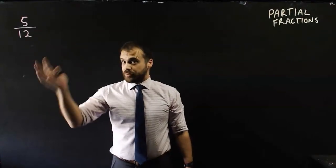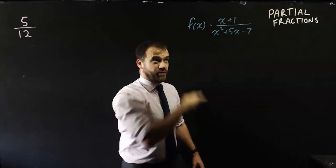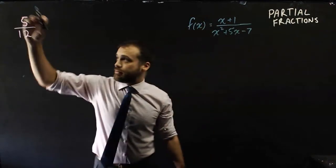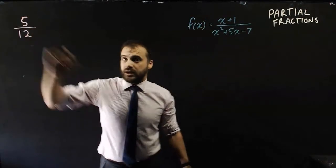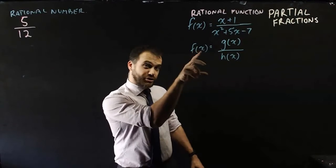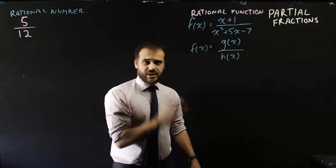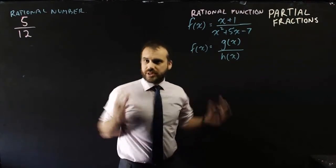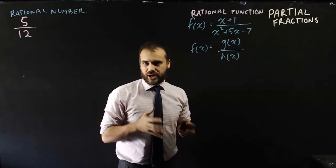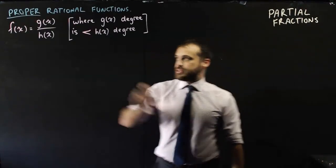This is a rational number, and this is a rational function — a function divided by a function, a number divided by a number. These rational functions can be really difficult to integrate unless you split them up into a few different fractions. In order to do that, we need to consider a couple of different cases.